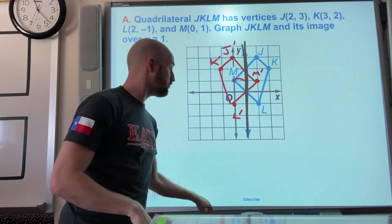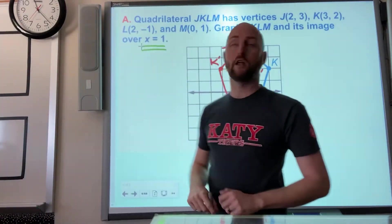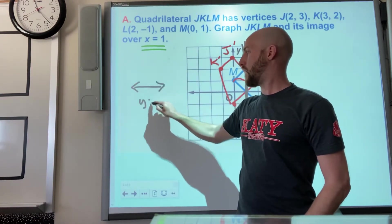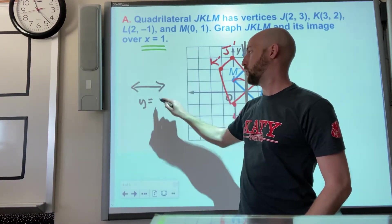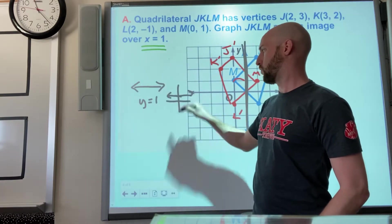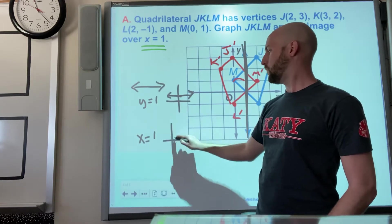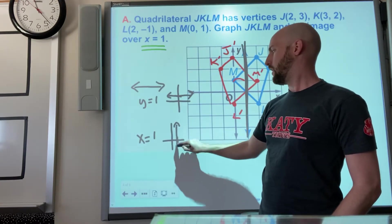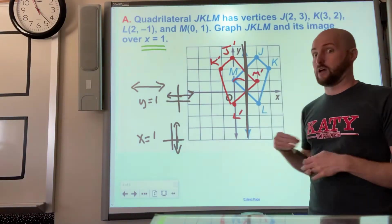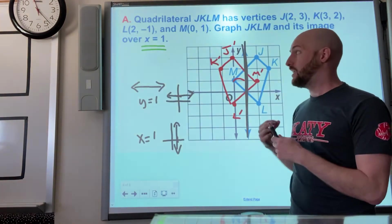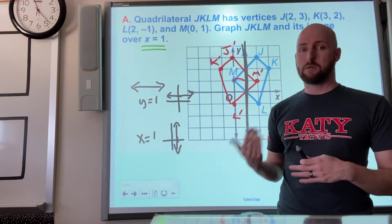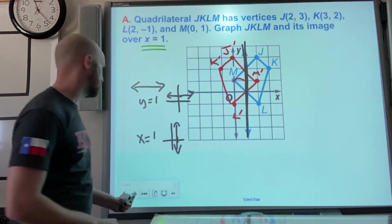One friendly reminder from algebra one: horizontal lines are always written as y equals whatever the number is. Y equals one would be going up one spot and drawing a horizontal line. This example x equals one, we go over one spot and make a vertical line. So if the question just said x equals one or y equals one without drawing the line, make sure that gets placed correctly.